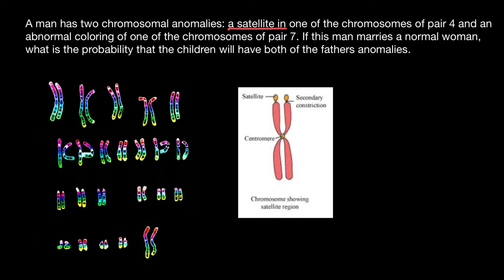On this picture you can see what we call a satellite. We have a primary constriction at the centromere. Only a few chromosomes have a secondary constriction, and that is considered to be normal. But in most chromosomes, we do not see satellite chromosomes — it is a piece of the chromosome separated by this constriction.